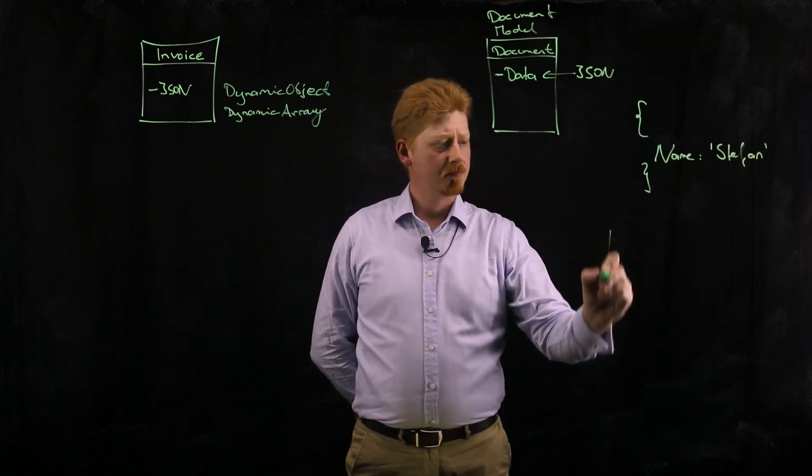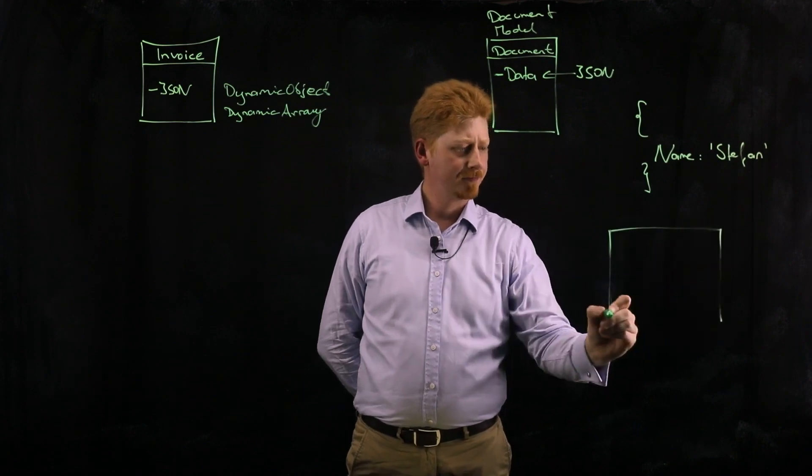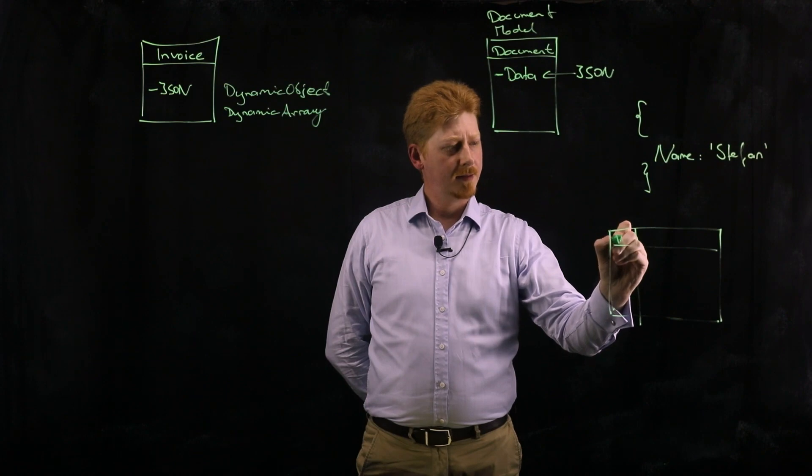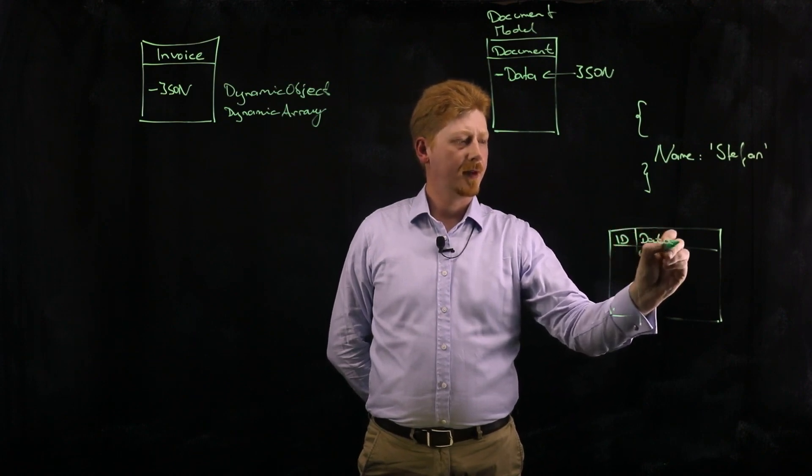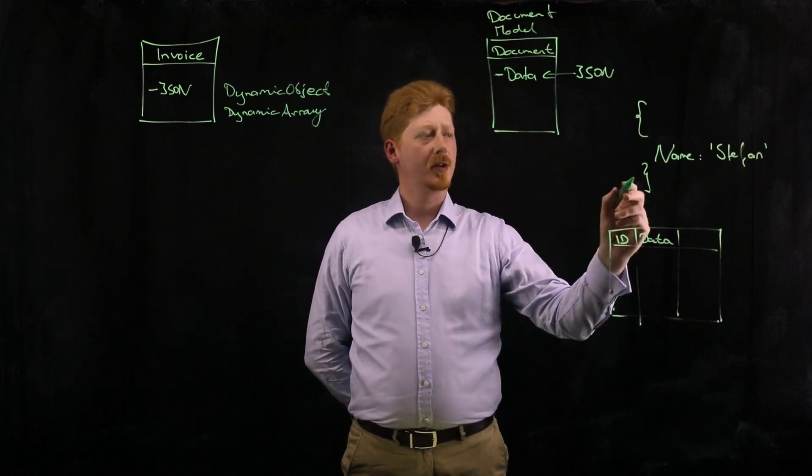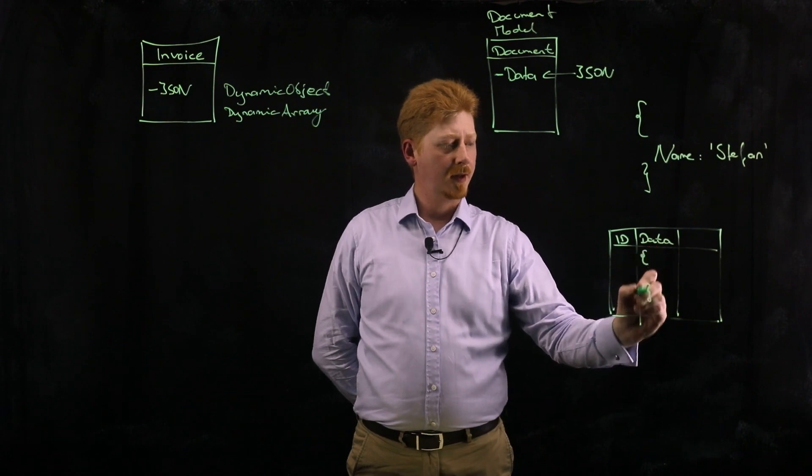This basically gives me a table to work with. The table gives me an ID and obviously a data column. And this data column includes the complete JSON stream as a blob.